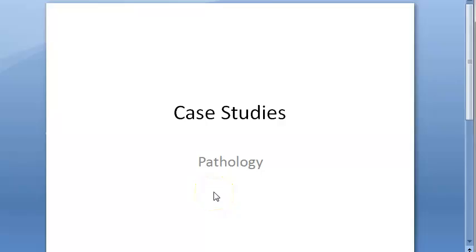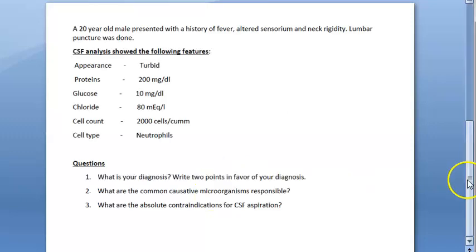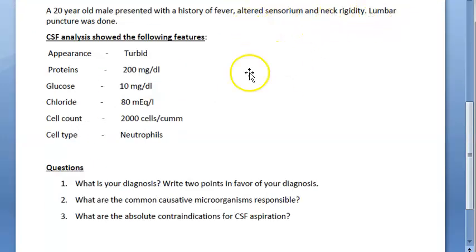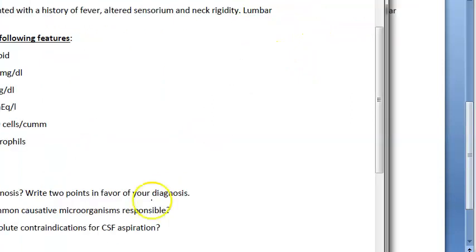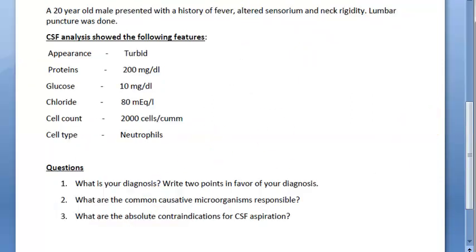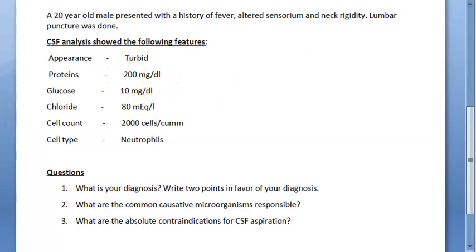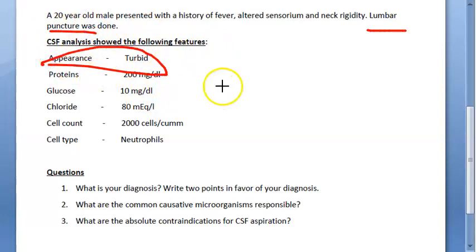Hello, people. In this video, let us look at some case studies of pathology. Here you have a 20-year-old male who has presented with history of fever, altered sensorium, and neck rigidity. A lumbar puncture was done and CSF was collected. The CSF analysis shows the following features: the appearance is turbid, so definitely there is some meningitis — you can see some infection.